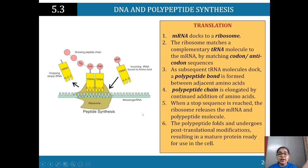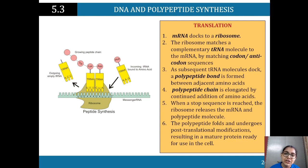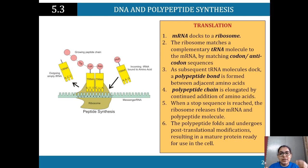When the stop sequence is reached, the ribosome releases the mRNA and the polypeptide molecule. The polypeptide then undergoes post-translational modification that results in a mature protein ready for use. This modification ensures we've got what we need — for instance, if there's a wrong code, the modifications help ensure the right protein is produced. We'll come back to this when we look at mutations in module six.